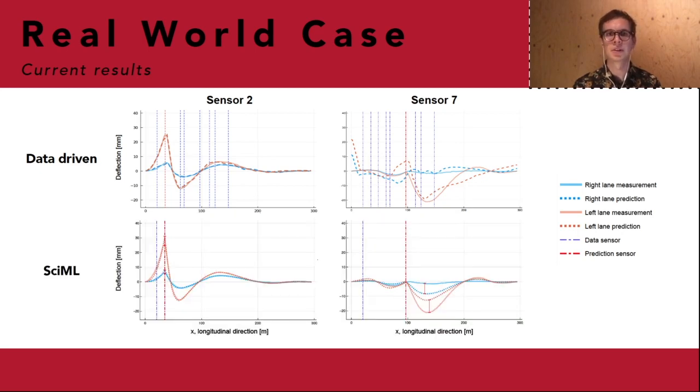And for the scientific machine learning model we're able to basically get the same performance as the data driven one but using only one sensor instead of nine. For the case of sensor seven the scientific machine learning model doesn't make a good prediction but it still makes a prediction that is consistent with physics.